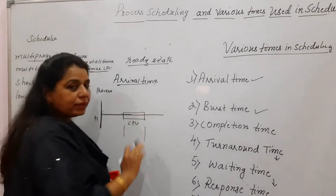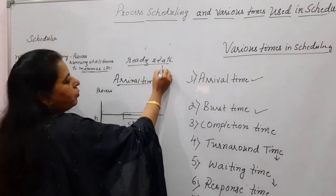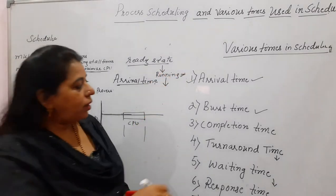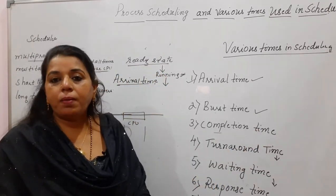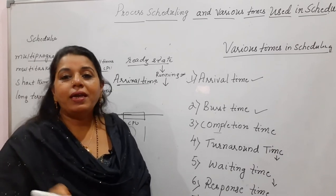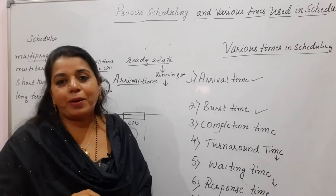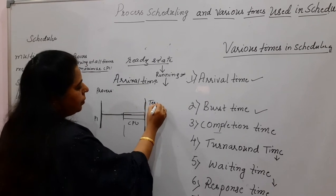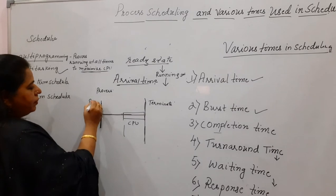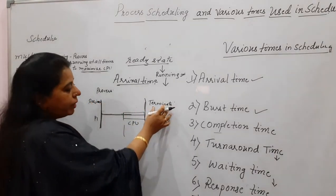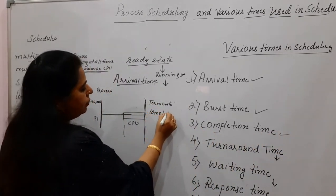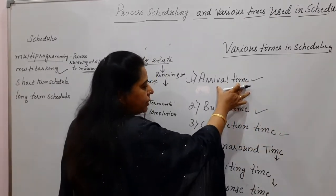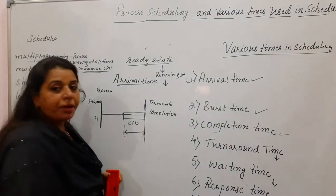Once the process completes its job it has to exit from the system — the CPU is deallocated from that process. The process has completed its job and will terminate. The time at which the process completes its job is called the completion time. Arrival time is a point of time whereas burst time is a duration. Completion time is also a point of time.